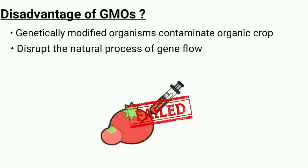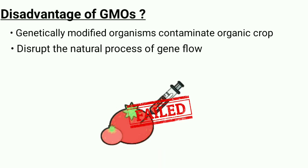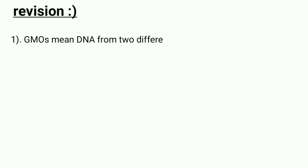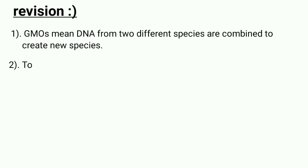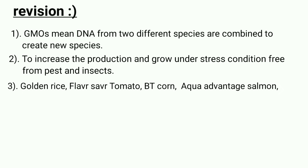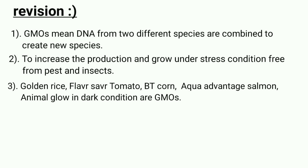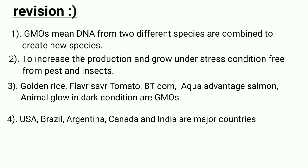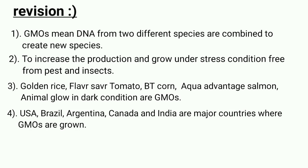Let's take a quick recap. Genetically modified organisms mean DNA from two different species are combined to create a new species. To increase production and grow under stress conditions, free from pests and insects, we need genetically modified crops. Golden rice, Flavour Saver tomato, Bt corn, AquaAdvantage salmon, and animals that glow in the dark are examples of GMOs. Nowadays, USA, Brazil, Argentina, Canada, and India are major countries where GMOs are grown. But GMOs can affect organic crops by cross-pollination and many other factors.